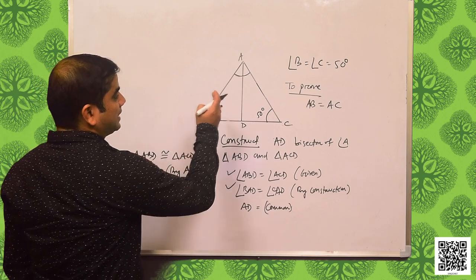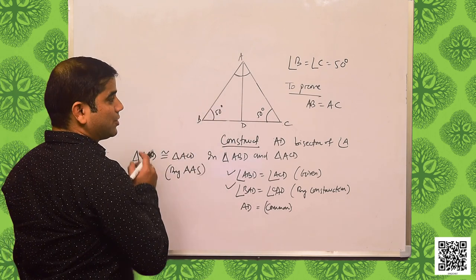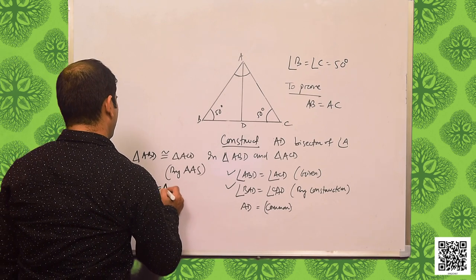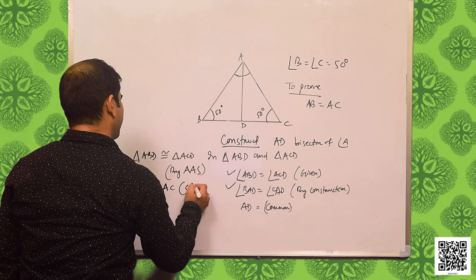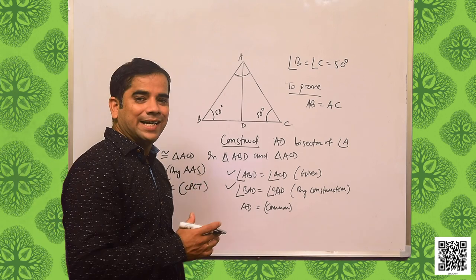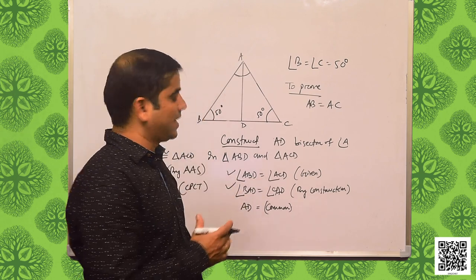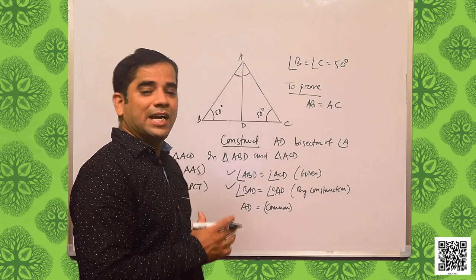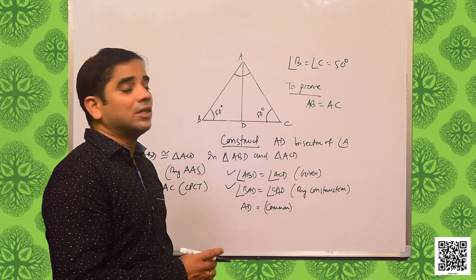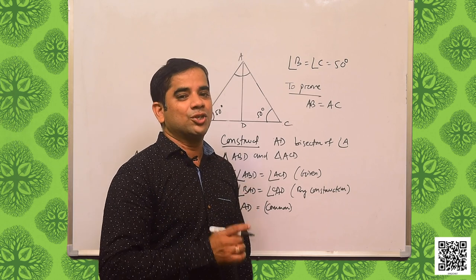In triangle ABD and triangle ACD: angle ABD is equal to angle ACD — that is given. Angle BAD is equal to angle CAD — by construction. And AD is the common side. So we have two angles equal to each other and a common side. Therefore, triangle ABD is congruent to triangle ACD by AAS congruency. As these two triangles are congruent, I can write AB is equal to AC by CPCT. It is proved that the sides opposite to the equal angles of an isosceles triangle are also equal to each other. So, the converse of the theorem holds true.